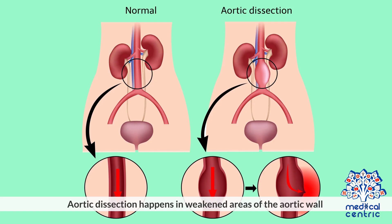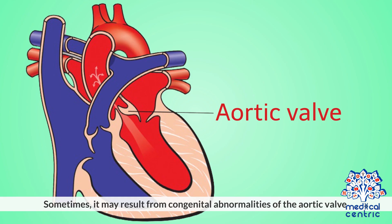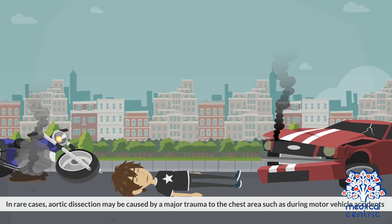Aortic dissection happens in weakened areas of the aortic wall. Chronic high blood pressure can weaken the aortic tissue, making it more susceptible to tearing. Sometimes it may result from congenital abnormalities of the aortic valve, such as Marfan syndrome or bicuspid aortic valve. In rare cases, aortic dissection may be caused by a major trauma to the chest area, such as during motor vehicle accidents.